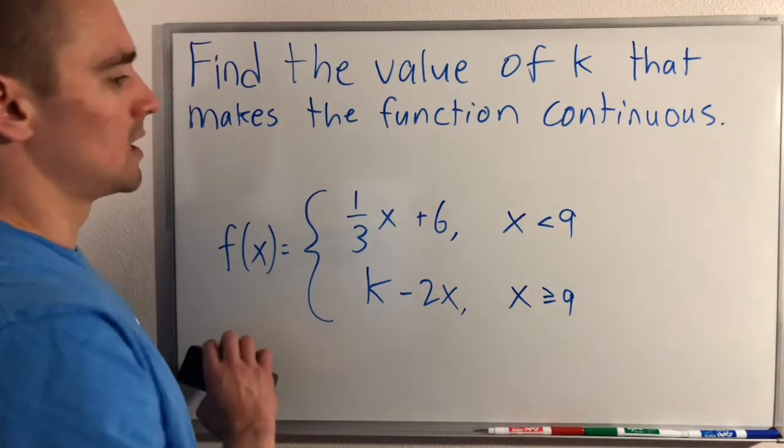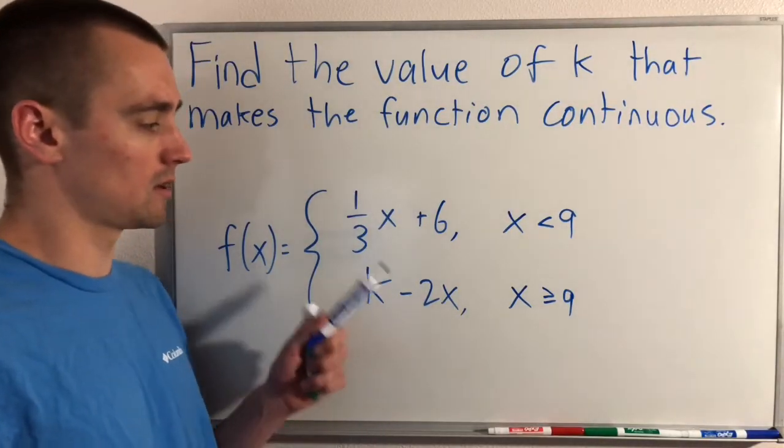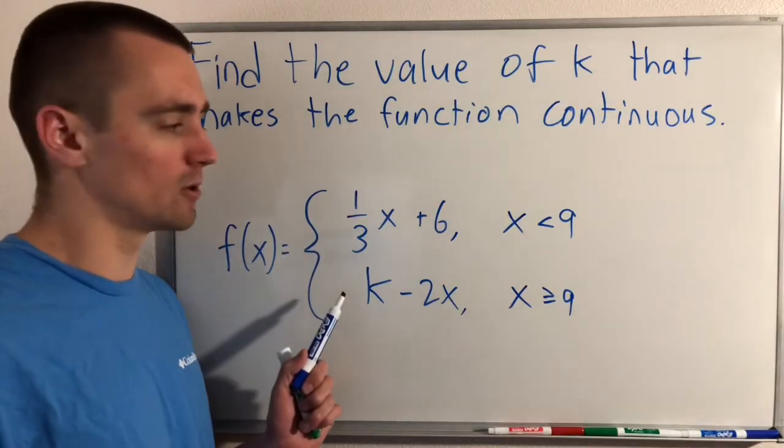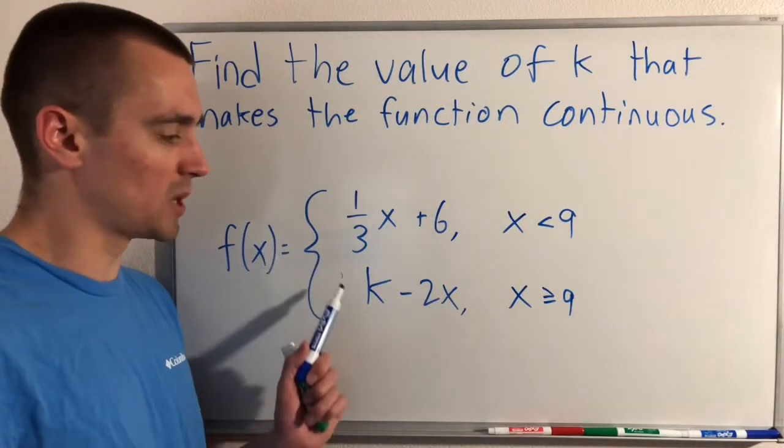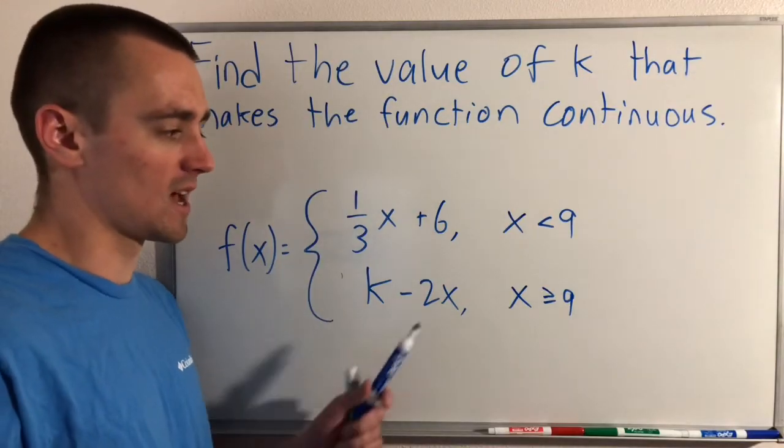In order to figure out what k needs to be to make this entire piecewise function continuous, we just need to make sure that these two pieces of our piecewise function line up when x equals 9.